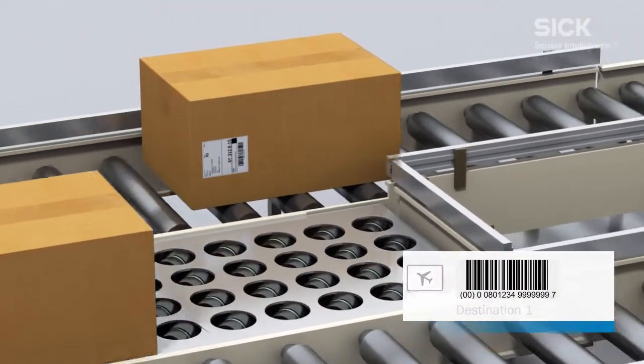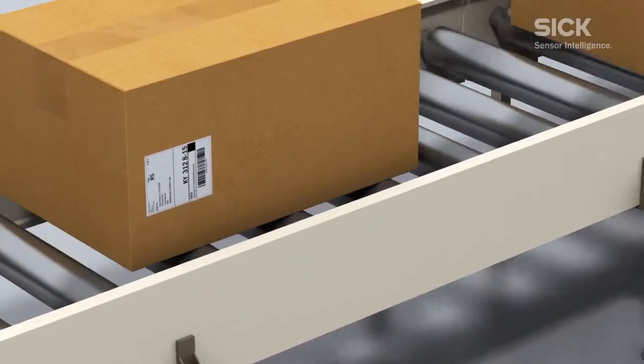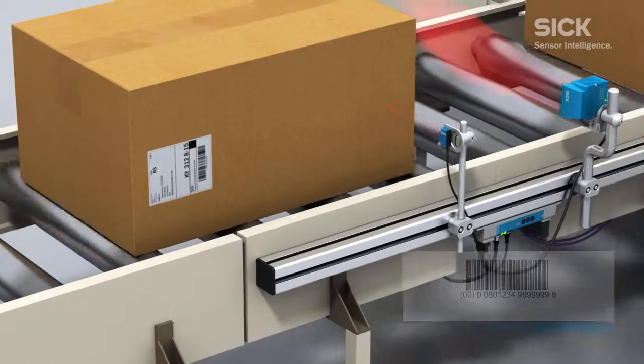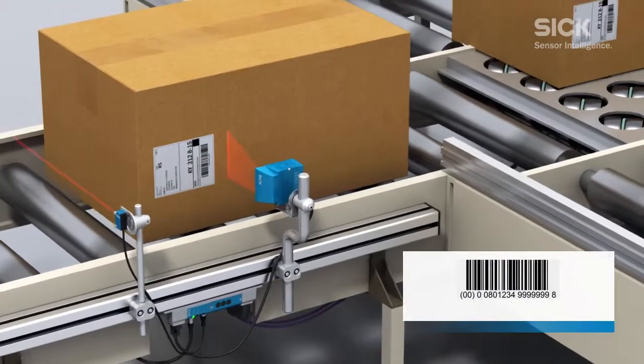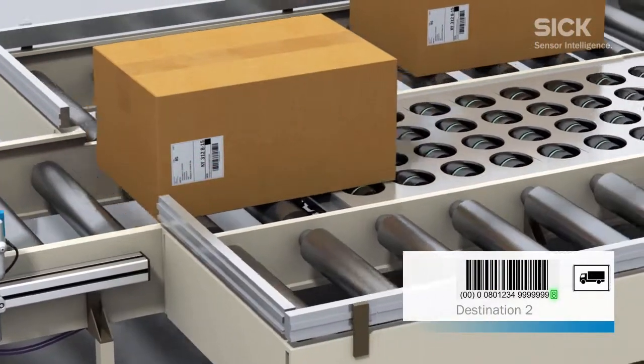The content of the barcode is compared with the set evaluation conditions to determine the destination to which the parcels are forwarded. The switch is controlled directly with the digital switching outputs of the identification sensor.